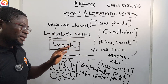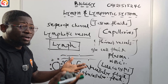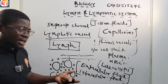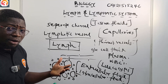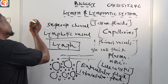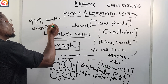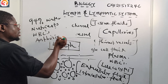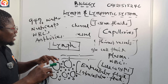The lymph has several components. The lymph is about 94% water. There are also nutrients. There are WBCs (white blood cells) and antibodies, which are there to fight against diseases. So the components of the lymph are: 94% water, nutrients, WBCs, and antibodies.